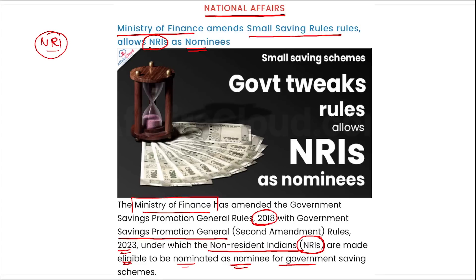There is a condition: payment to such a nominee shall be on a non-repatriation basis. This amendment has been added as a sub-rule in the principal rules, and the new rule indicates that the money needs to be utilized in India. NRIs can be nominated, but the money provided will be used in India only.